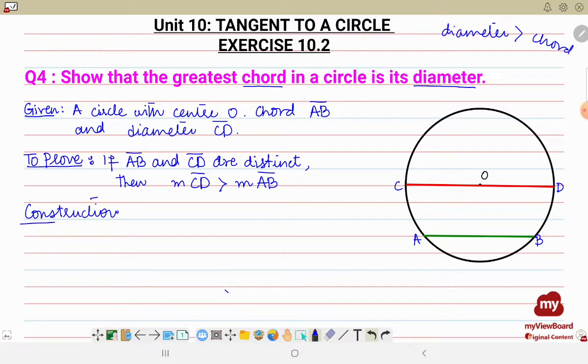What are we going to construct? We'll be joining O to A and O to B. So join O to A and O to B to form a triangle, triangle OAB.